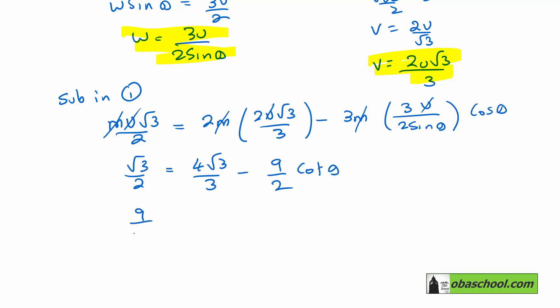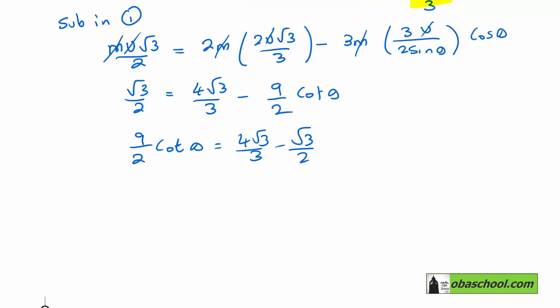So we get 9 over 2 cot theta is 4 root 3 on 3. Take away root 3 on 2. Which gives us 9 over 2 cot theta is equal to 5 root 3 on 6.